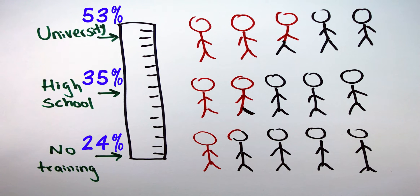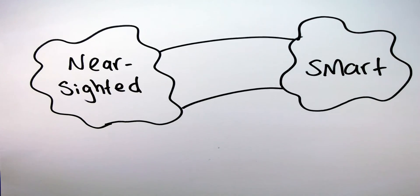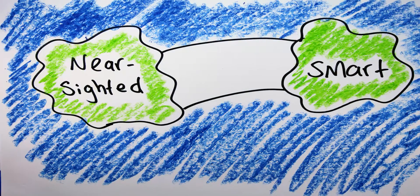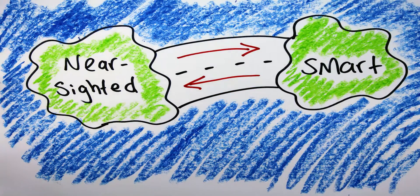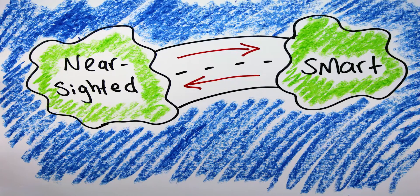Such studies only show that there's a link between being nearsighted and being smart. They do not suggest that being nearsighted is the cause and being smart is the effect. In fact, research suggests that the cause and effect relationship between being nearsighted and being smart could go both ways.